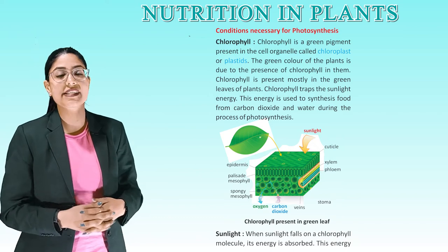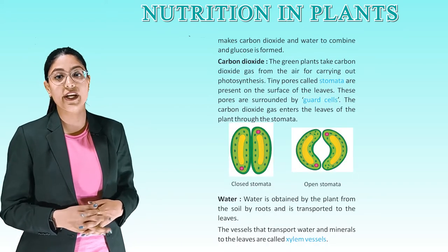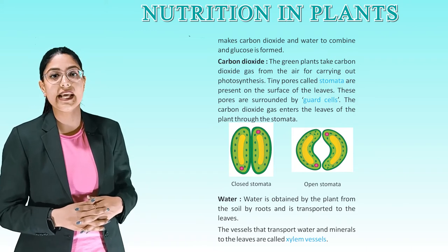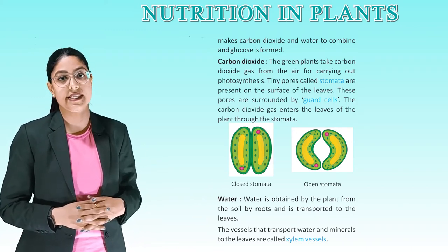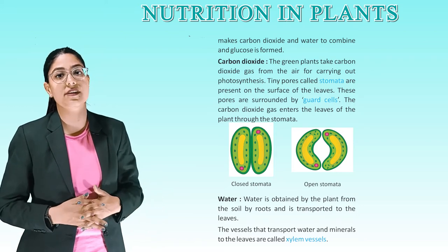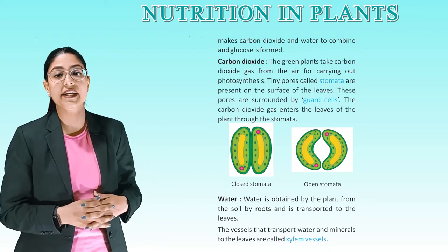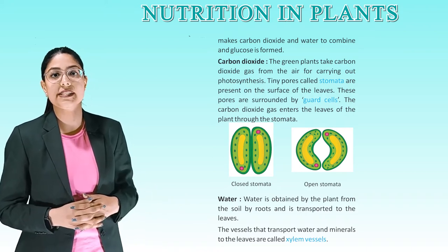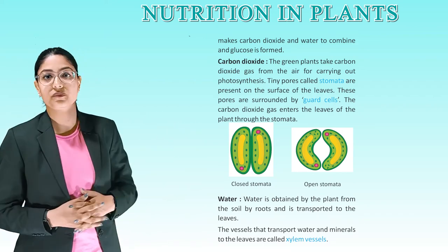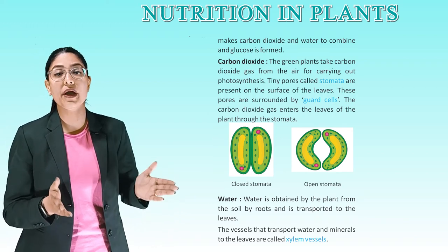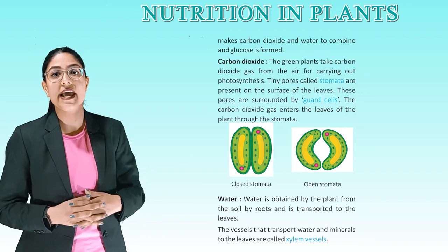Next condition is sunlight. When sunlight falls on a chlorophyll molecule, its energy is absorbed. This energy makes carbon dioxide and water combine to form glucose. Next is carbon dioxide. Green plants take carbon dioxide gas from the air for photosynthesis. Tiny pores called stomata are present on the surface of leaves, surrounded by guard cells. Carbon dioxide enters the leaves through the stomata. This picture shows a closed stomata and an open stomata. Next is water. Water is obtained by the plant from the soil through roots and transported to the leaves. The vessels that transport water and minerals to the leaves are called xylem vessels.